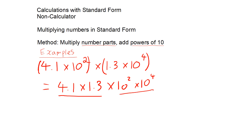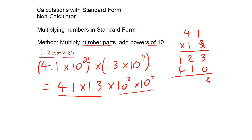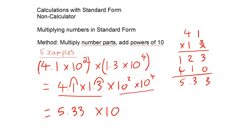So you could just do 4.1 times 1.3, and then 10 to the 2 times 10 to the 4. To do 4.1 times 1.3, I'm going to do 41 times 13 and then put the decimal point back in. That gives 5.33, because the decimal point moves back two places. So the answer is 5.33 times 10 to the power of 6.